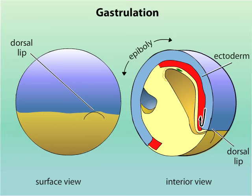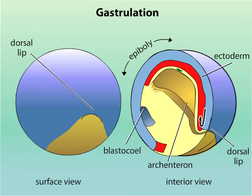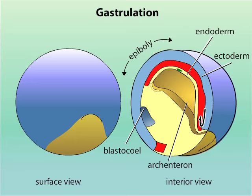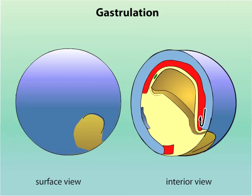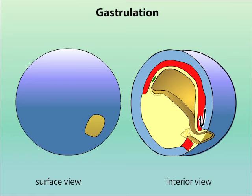As gastrulation proceeds, a cavity called the archenteron forms while the blastocele progressively shrinks. The archenteron is the primitive gut and is completely surrounded by endodermal tissue. The endoderm at the roof of the cavity originated from the outside of the embryo. The cavity is continuous with the outside via the blastopore, which eventually becomes the anus of the animal. As the ectoderm extends around the embryo, another set of bottle cells forms. These cells migrate into the embryo and other surface cells follow them, creating the ventral lip of the blastopore.